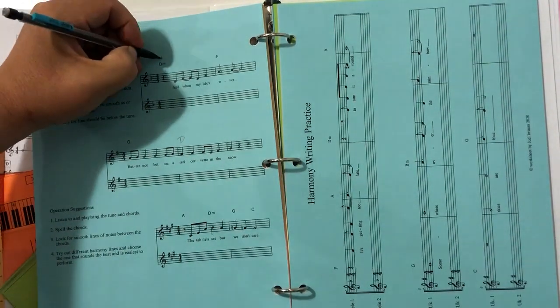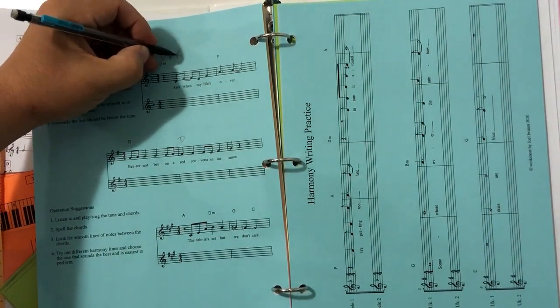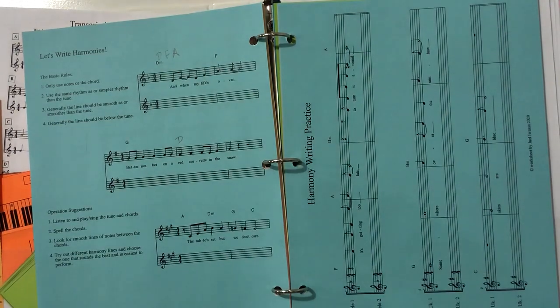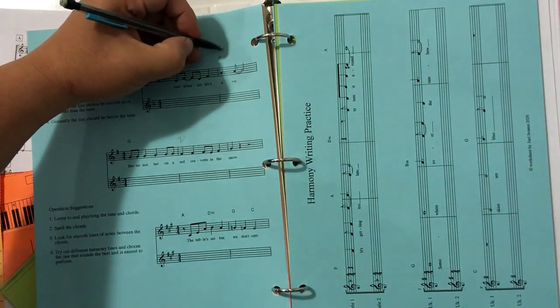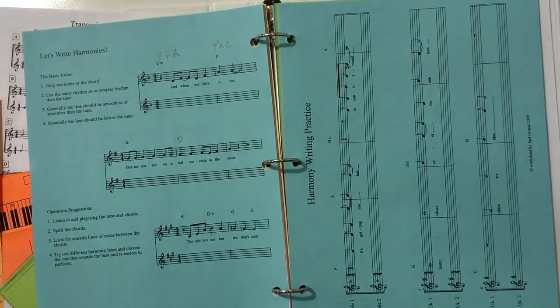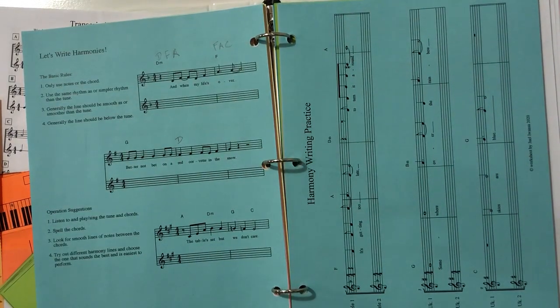So D minor is spelled D, F, and A. And F major is spelled F, A, and C. So these are the only notes we can use.